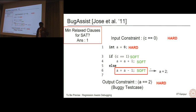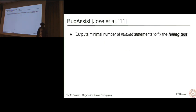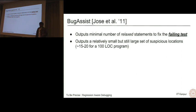So what BugAssist does is it reports these two particular expressions as suspicious program locations. BugAssist in summary outputs the minimum number of relaxed statements to fix the failing test. In some sense, making the least number of modifications to the program to actually fix the test. This outputs are relatively small, but it's still a kind of large set of suspicious locations. It's around 15 to 24 per 100 lines of code program. The question is, can we do better?